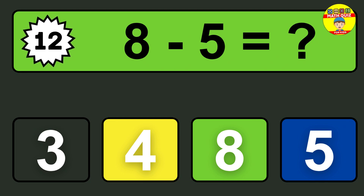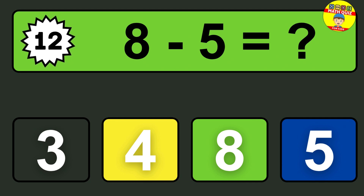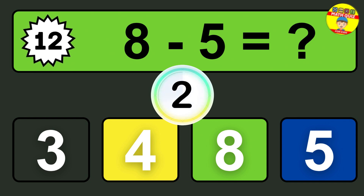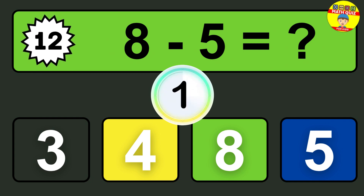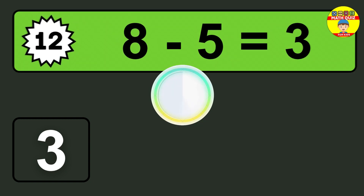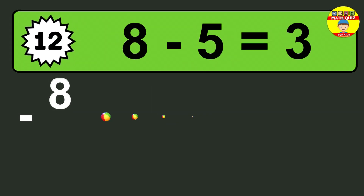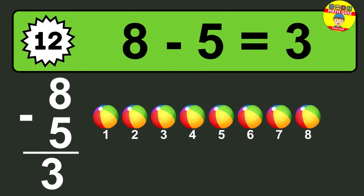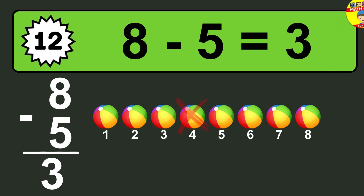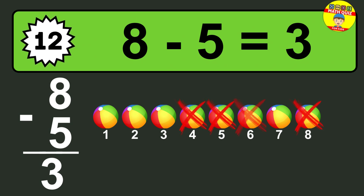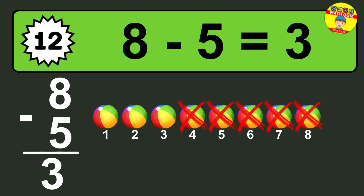Question twelve: eight minus five equals what? So the answer is eight minus five is three. Let's count it. One, two, three.